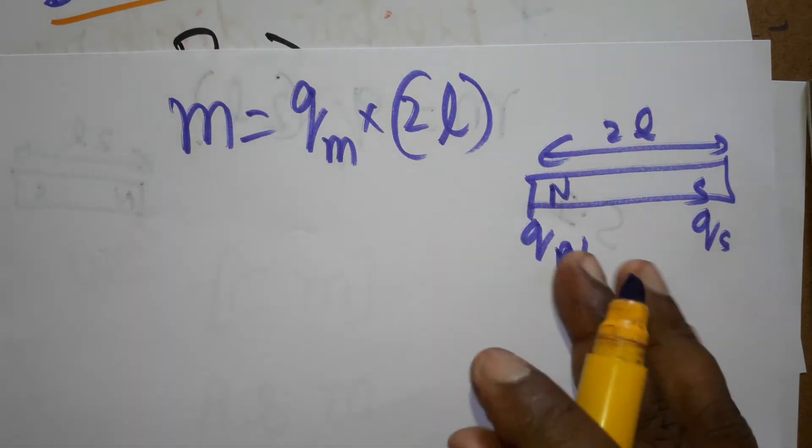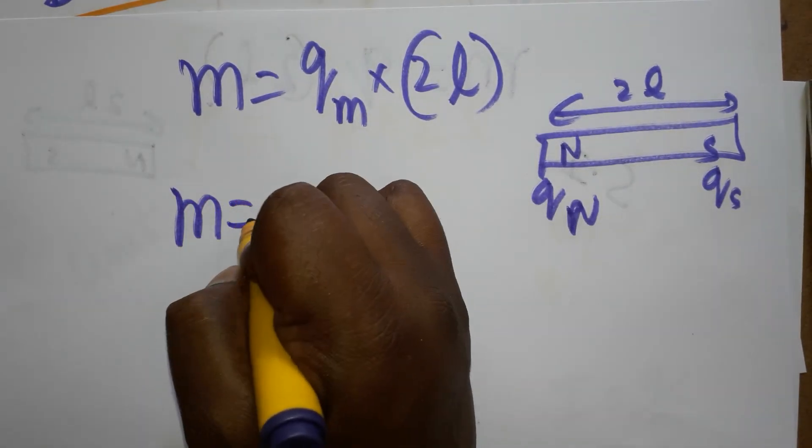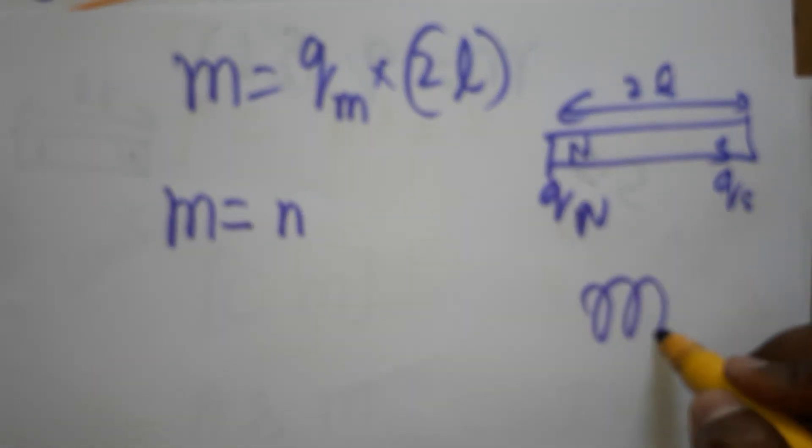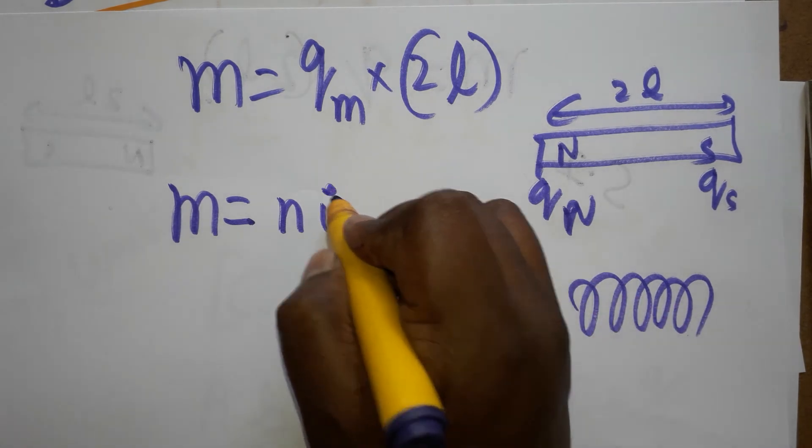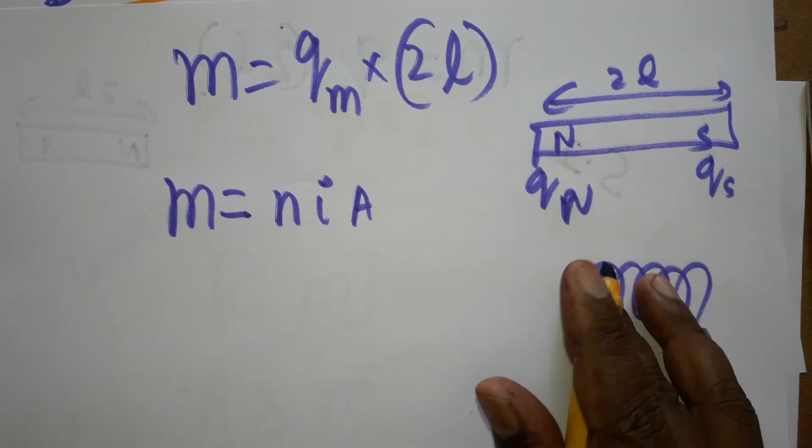QM is not a charge, it is a pole strength. The other formula for magnetic dipole moment is N times I times A, in case of solenoid coil. That is N times I times A: current into area of the coil.